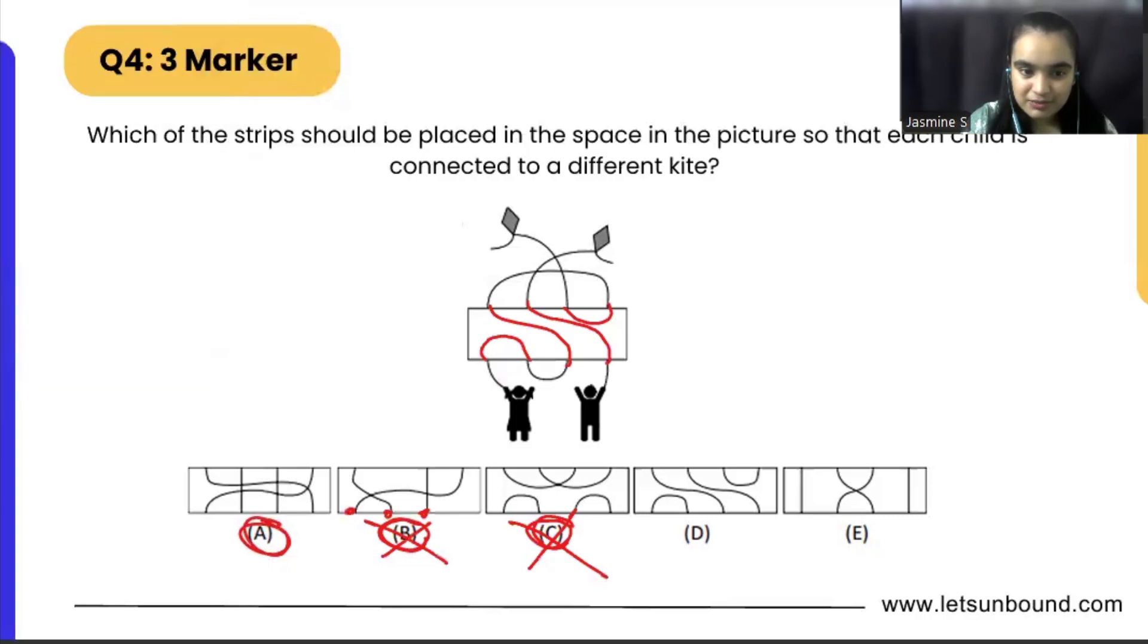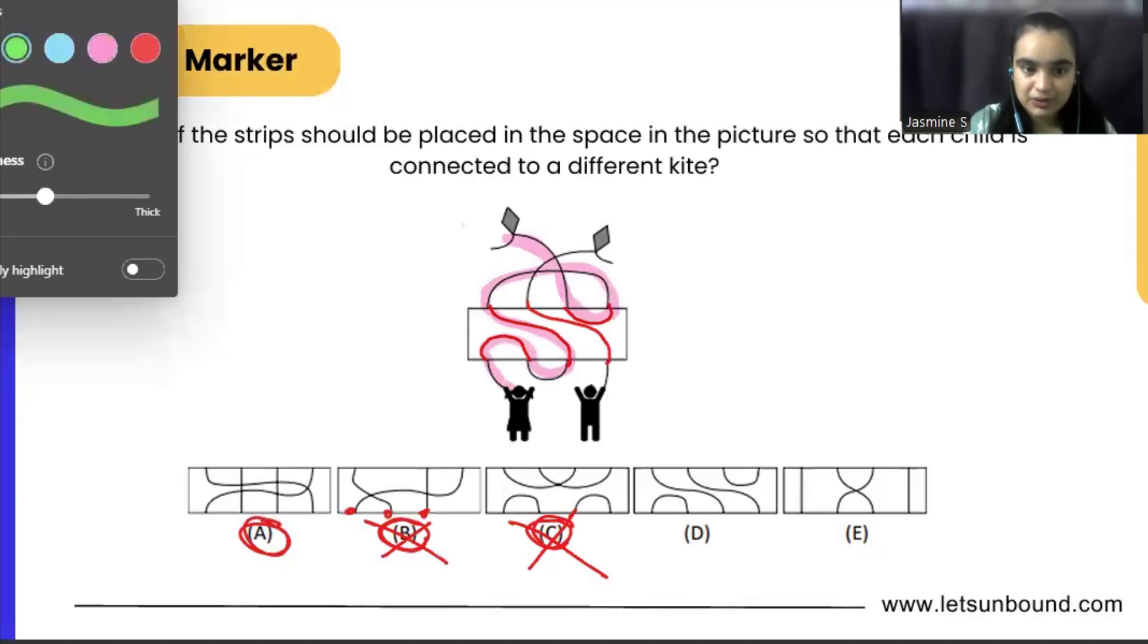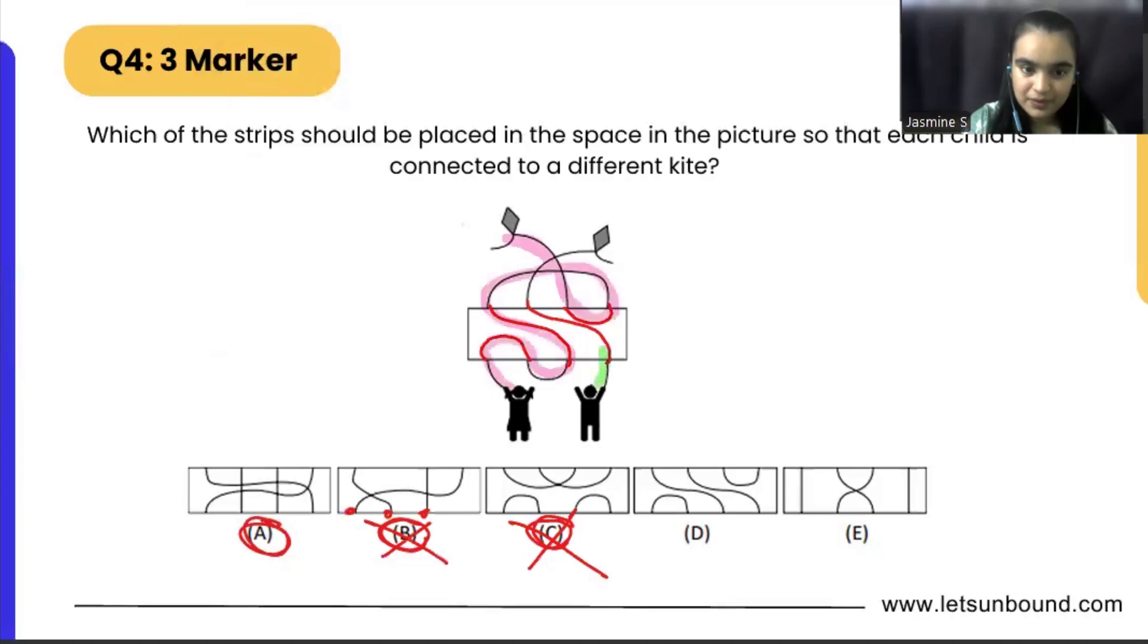So if we are starting from here, okay the girl's kite is reaching, right, it is having the proper path to reach the kite. Let's see for the boy. Okay, boy's path is distinct, right, it is not overlapping with any of the girl's string. We can reach kite easily.